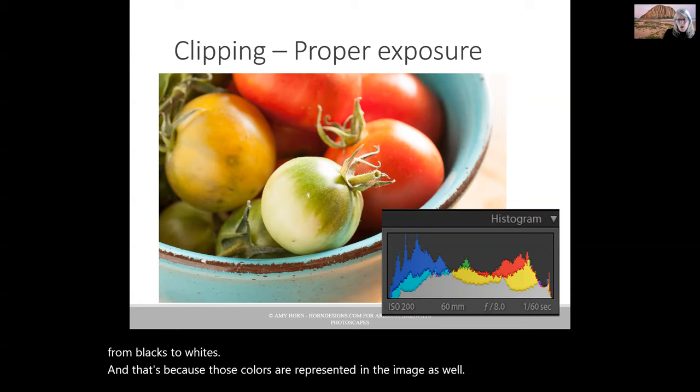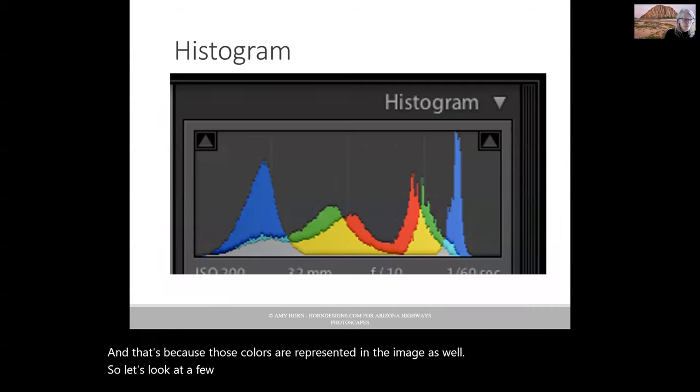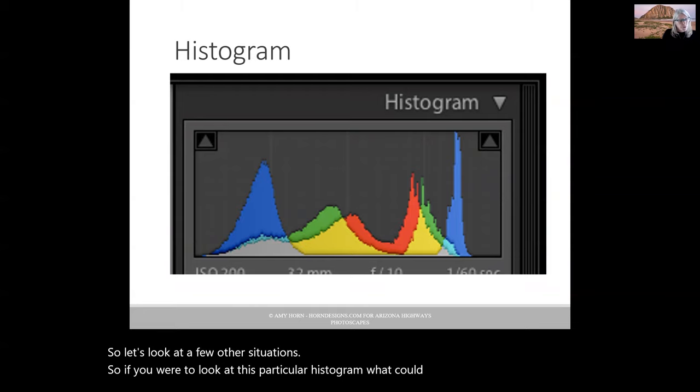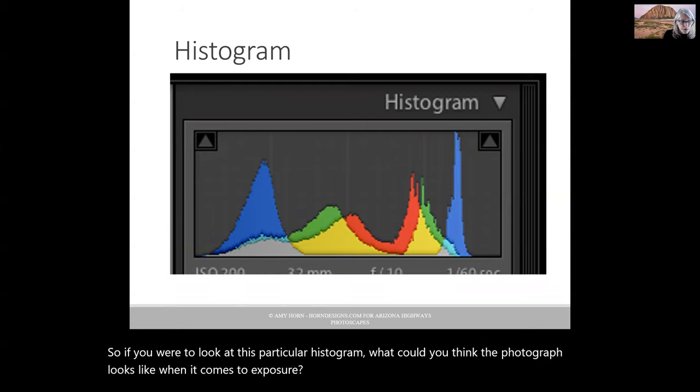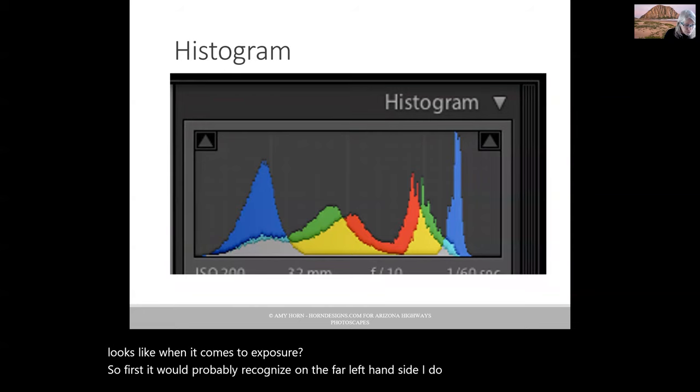Let's look at a few other situations. If you were to look at this particular histogram, what could you think the photograph looks like when it comes to exposure? First you would probably recognize on the far left-hand side, I do not have complete black tones, and I do not have complete white tones. But I do have a fairly wide tonal range.